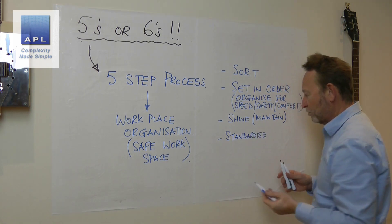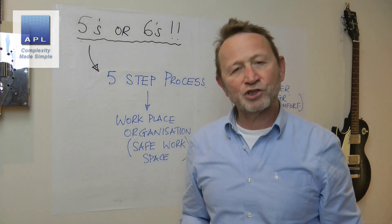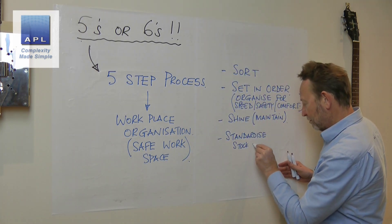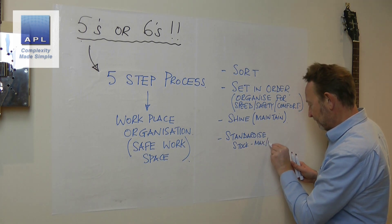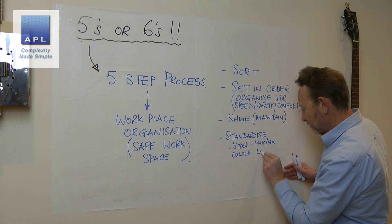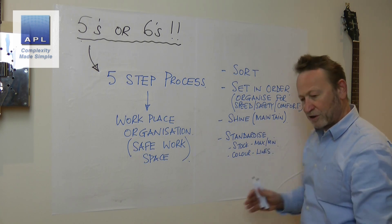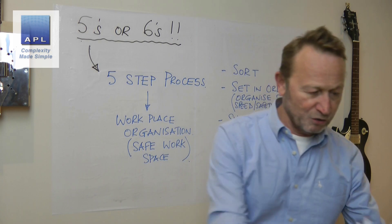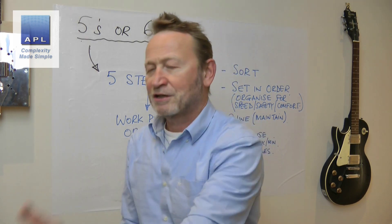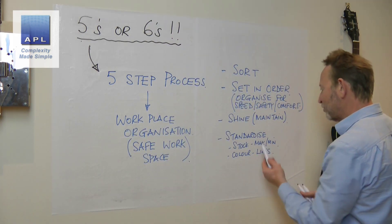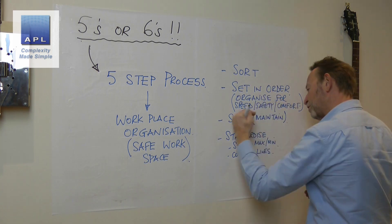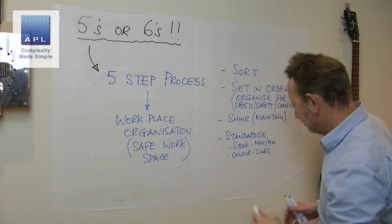Standardize — what's this all about? Again it's a doing word. Look at how much stock you've got, decide stock maximum and minimum. Decide colors and lines: green lines indicate a gangway, red lines indicate scrap area, blue lines indicate forklift truck routes, whatever it happens to be. Standardize — again they're all verbs, you are going to do this.